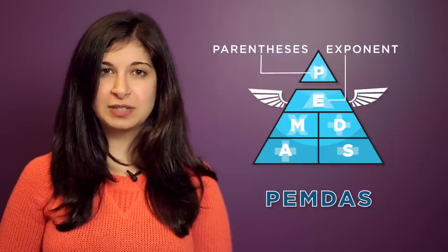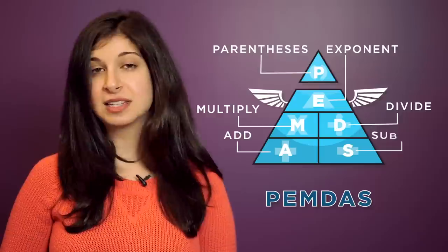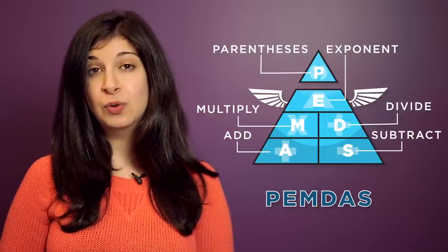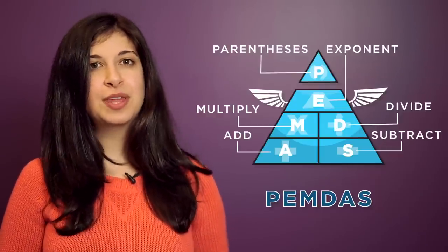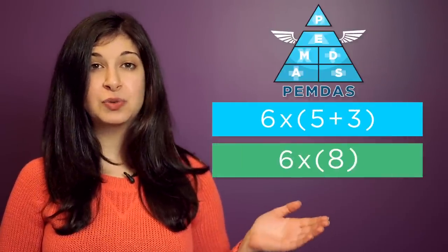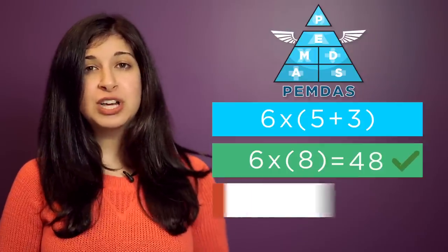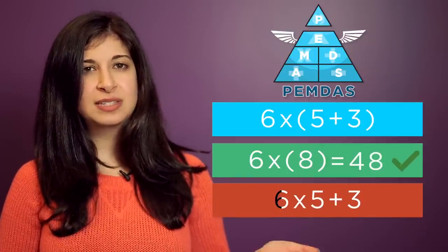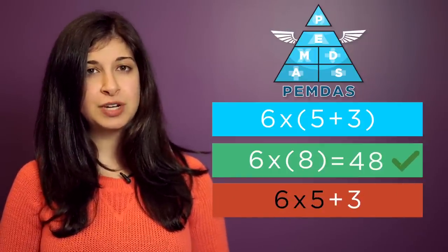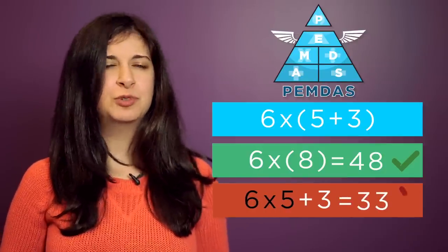Parentheses, exponents, multiplication, divide, addition, and subtraction. So do things in parentheses first. So six times five plus three turns into six times eight, which equals 48. If we just went left to right and did six times five and got 30, then added three, that would equal 33, which is wrong.